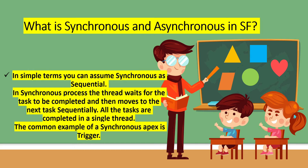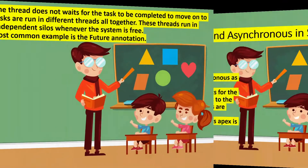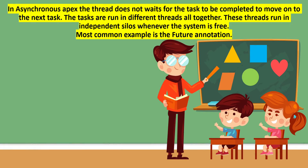For example, suppose you have three tasks: Task A, Task B, and Task C. In synchronous execution, Task A executes first, then it goes to Task B, then Task B completes and it goes to Task C. In asynchronous execution, these three tasks are completed in another thread and are executed in parallel. These threads run in independent silos whenever the system is free.